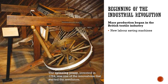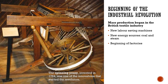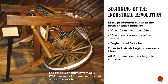Mass production began in the British textile industry with the introduction of new labor-saving machines. The spinning jenny, invented in 1764, was one of the innovations that started the revolution — it allowed a weaver to be far more productive. It was really just the first step; many more machines would follow. Eventually the human component would be removed and coal and steam would be used as the energy source to drive these machines — the beginning of factories. Other industries began to adopt the same ideas, and industrialization began to spread beyond British borders, with all European countries quickly beginning to industrialize by the end of the 18th century.